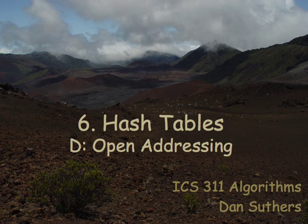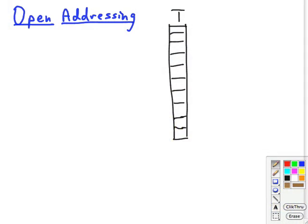Our final topic on hash tables is the open addressing strategy. The open addressing approach seeks to avoid the extra storage of all the linked lists that we had coming off of the hash table in the chaining approach by putting all the keys in the hash table itself.